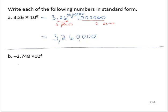So similarly, for exercise B, I have negative 2.748 times 10 to the fourth. And so that's negative 2.748 times—10 to the fourth is a one with four zeros.